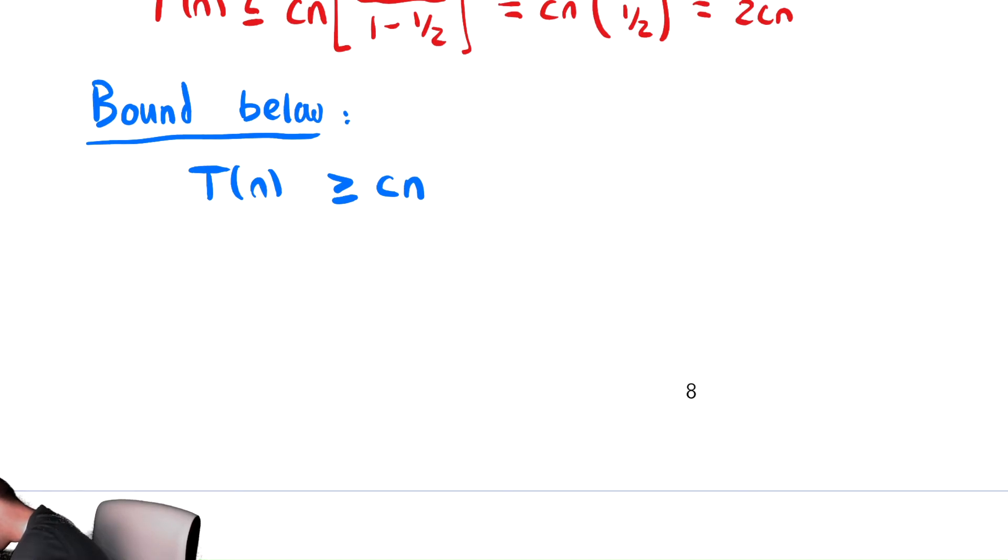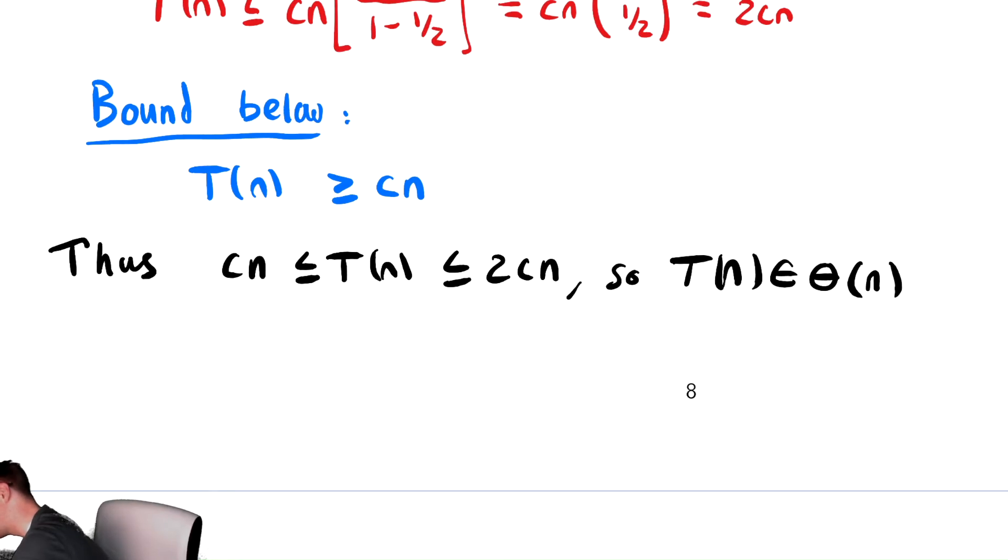Thus, cn is less than or equal to T(n) is less than or equal to 2cn. Those are my upper bound and lower bound. So T(n) is theta of n.